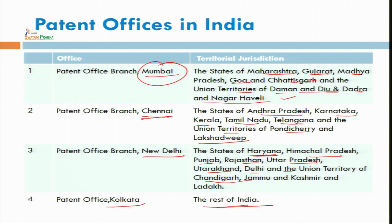Special patent offices are also opened in each state. For example, in Haryana or Rajasthan, there is the Rajasthan State Council for Science and Technology. The Department of Science and Technology (DST) is also there at the central level and in every state — for example, the Haryana State Council for Science and Technology. There are specific IPR cells in each state to help with registration of patent.